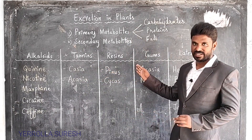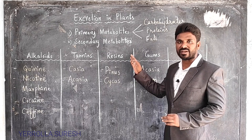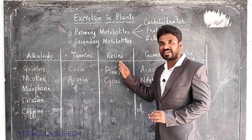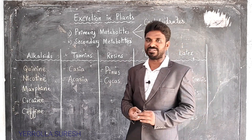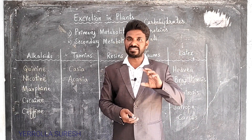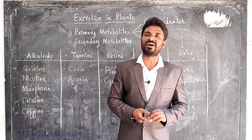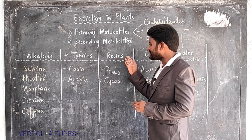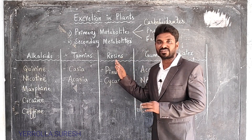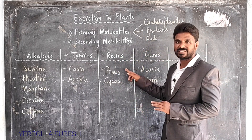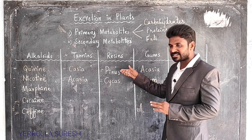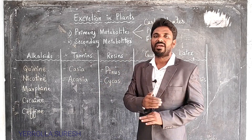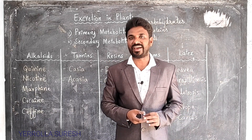Next, resins. Resins are another kind of secondary metabolite extracted from gymnosperms — plants in which seeds are developed outside the fruit. Examples of gymnosperm plants are Pinus and Cycas, and in both of these plants resins are produced. These resins are extracted and used in the preparation of varnishes.